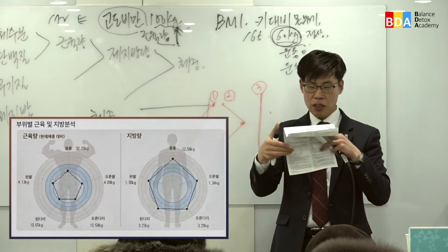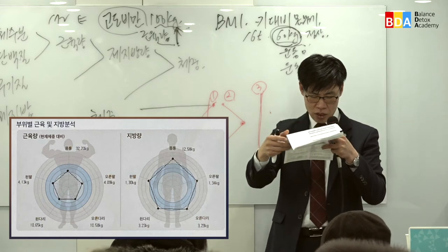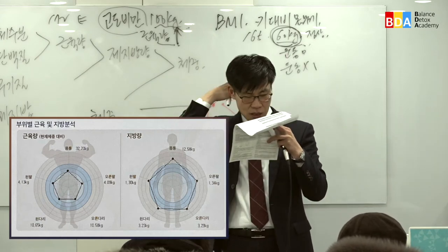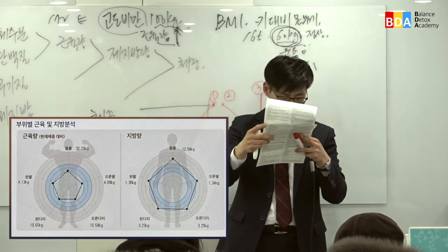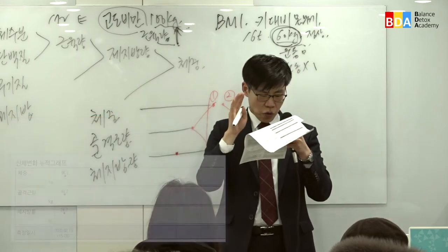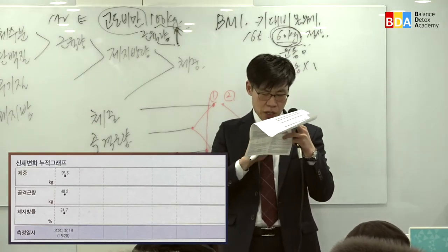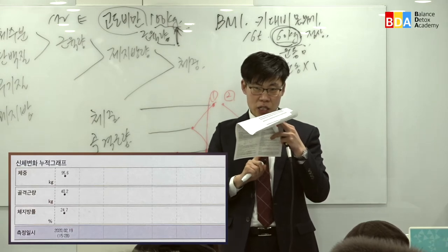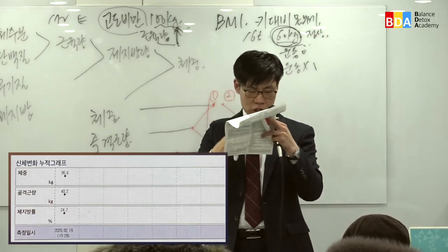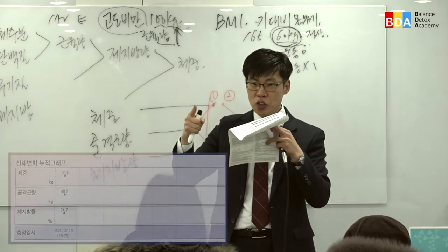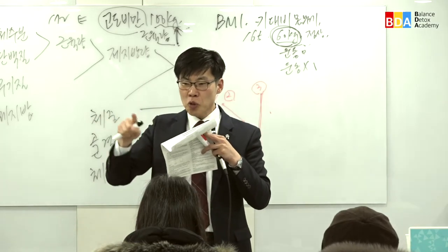부위별 근육과 지방 분석을 보시면 범위 안에 들어가 있는 분과 그렇지 않은 분이 있을 겁니다. 이 범위를 벗어났는지 확인해 보시고, 밑에 신체 변화 누적 그래프가 있습니다. 예를 들어 2월 10일과 2월 17일에 측정했다면 체중, 골격근량, 체지방량 변화를 선으로 이어서 일주일마다 얼마만큼 감량이 일어났는지 그래프로 볼 수 있습니다.